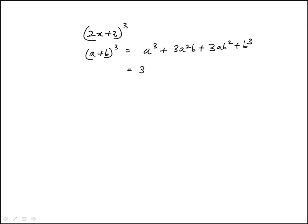If you apply that here, this would be 8x cubed. And then a squared would be 4x squared. I think I should write it in steps. It's easy to kind of get confused. And then 3 squared plus 27.